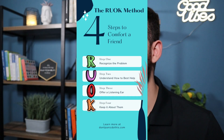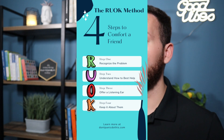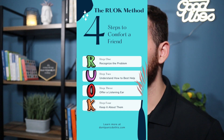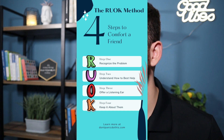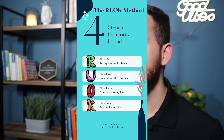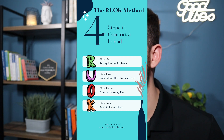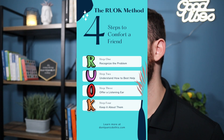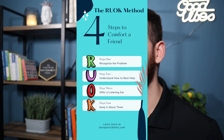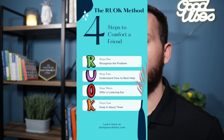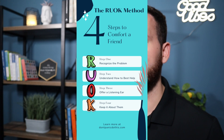To make this process a little bit easier, I came up with a four-step method called the RUOK method. This is a four-step process you can use both in person or over text, but it's especially important if you're comforting someone over text. Step one: recognize the problem. Step two: understand how to best help. Step three: offer a listening ear. Step four: keep it about them.